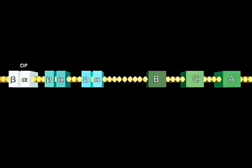The MHC gene locus contains three class II genes: DP, DQ, and DR, each formed by two chains, beta and alpha.